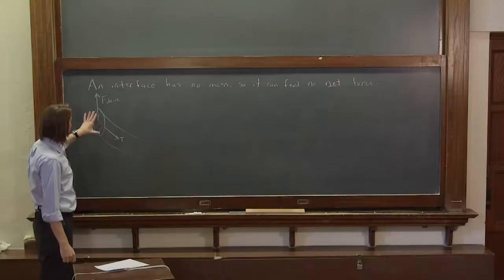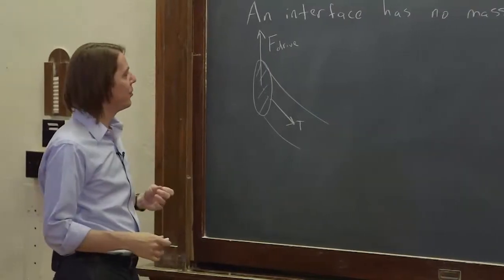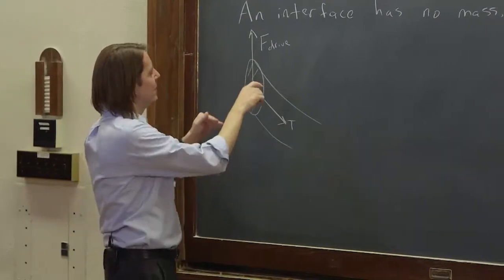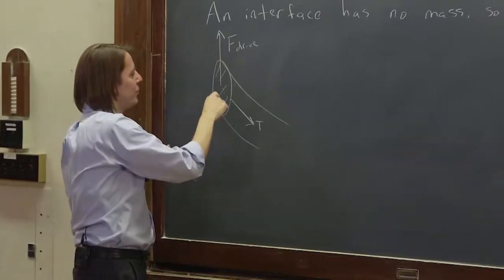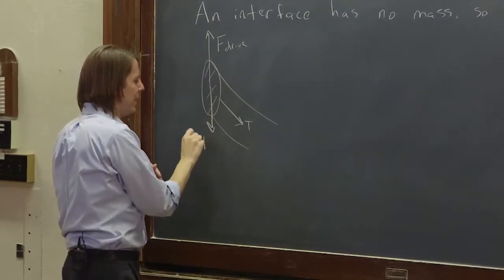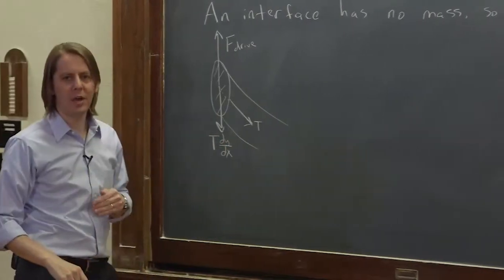And we need the sum of the forces at this interface to be zero. We need there to be no force at the interface. So you can break the tension into a component this way and down. So it's really this downward component of the tension that matters, and that's basically T times the slope, the total tension times dy/dx.